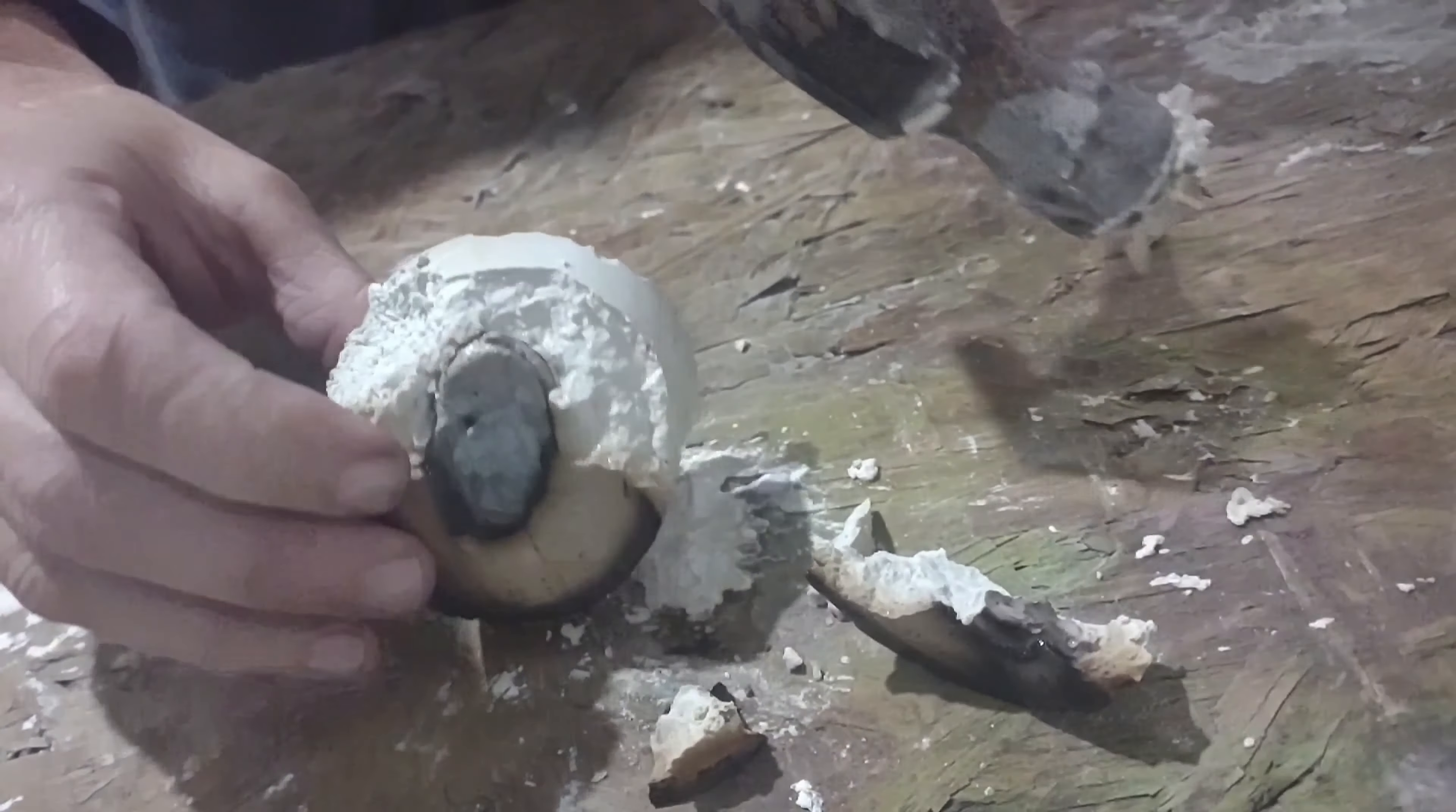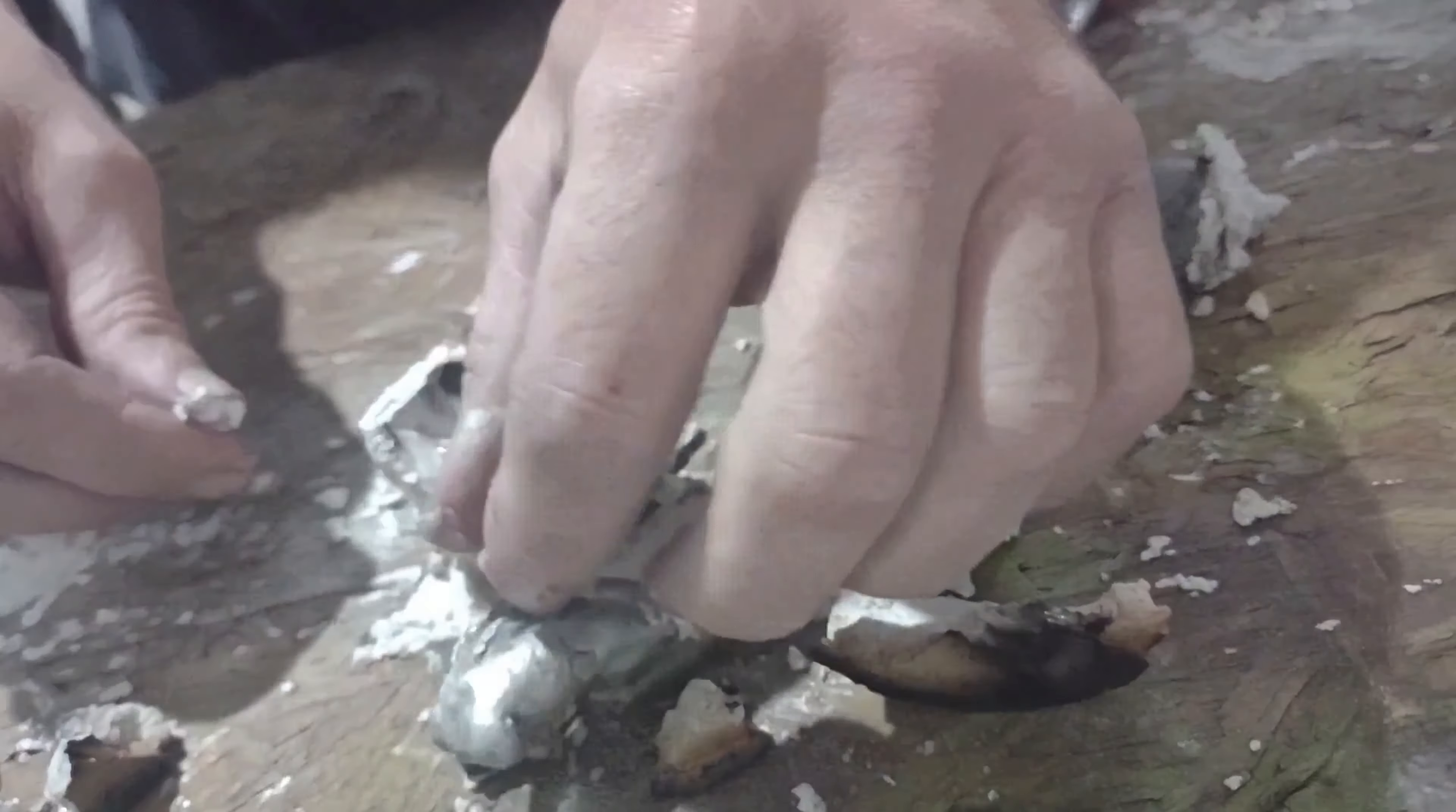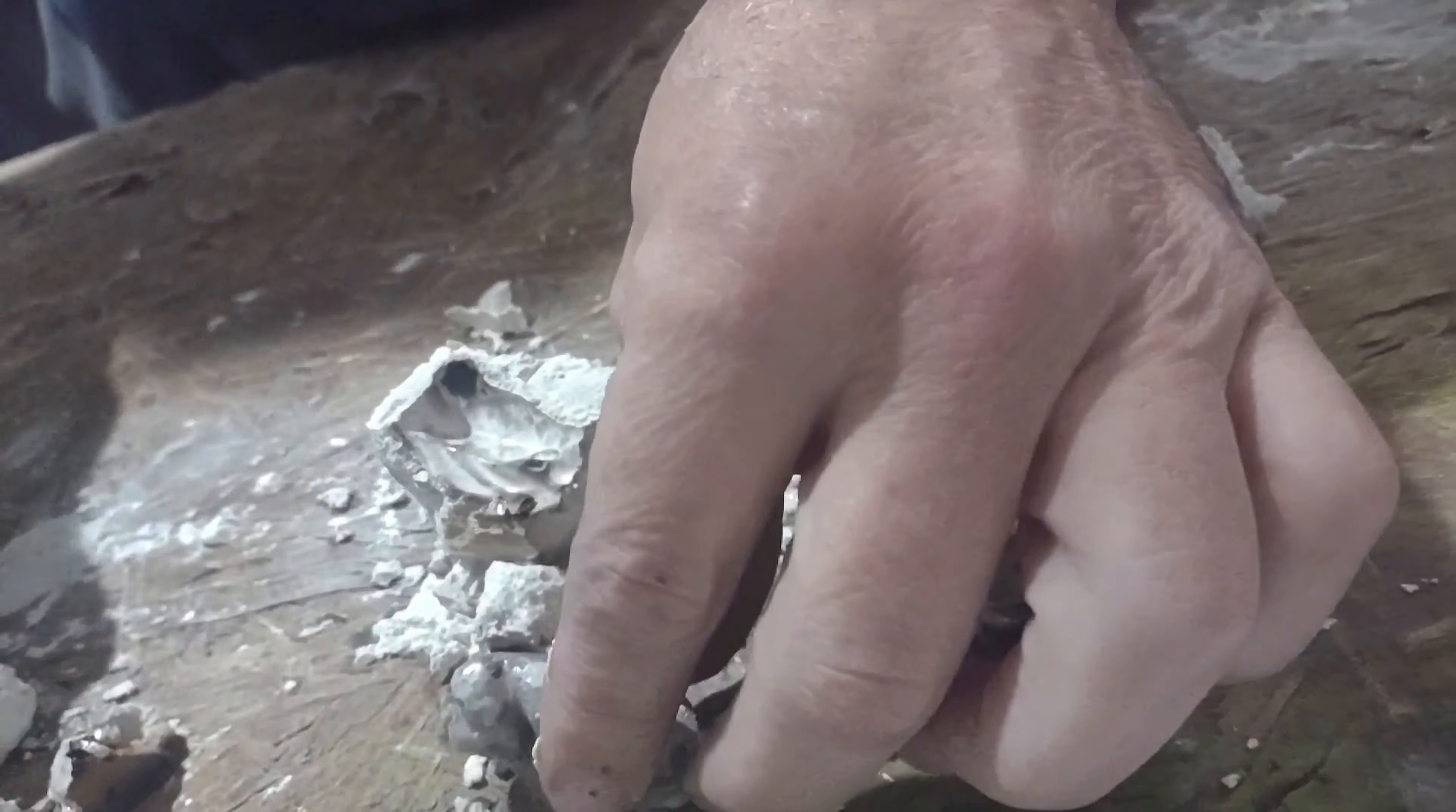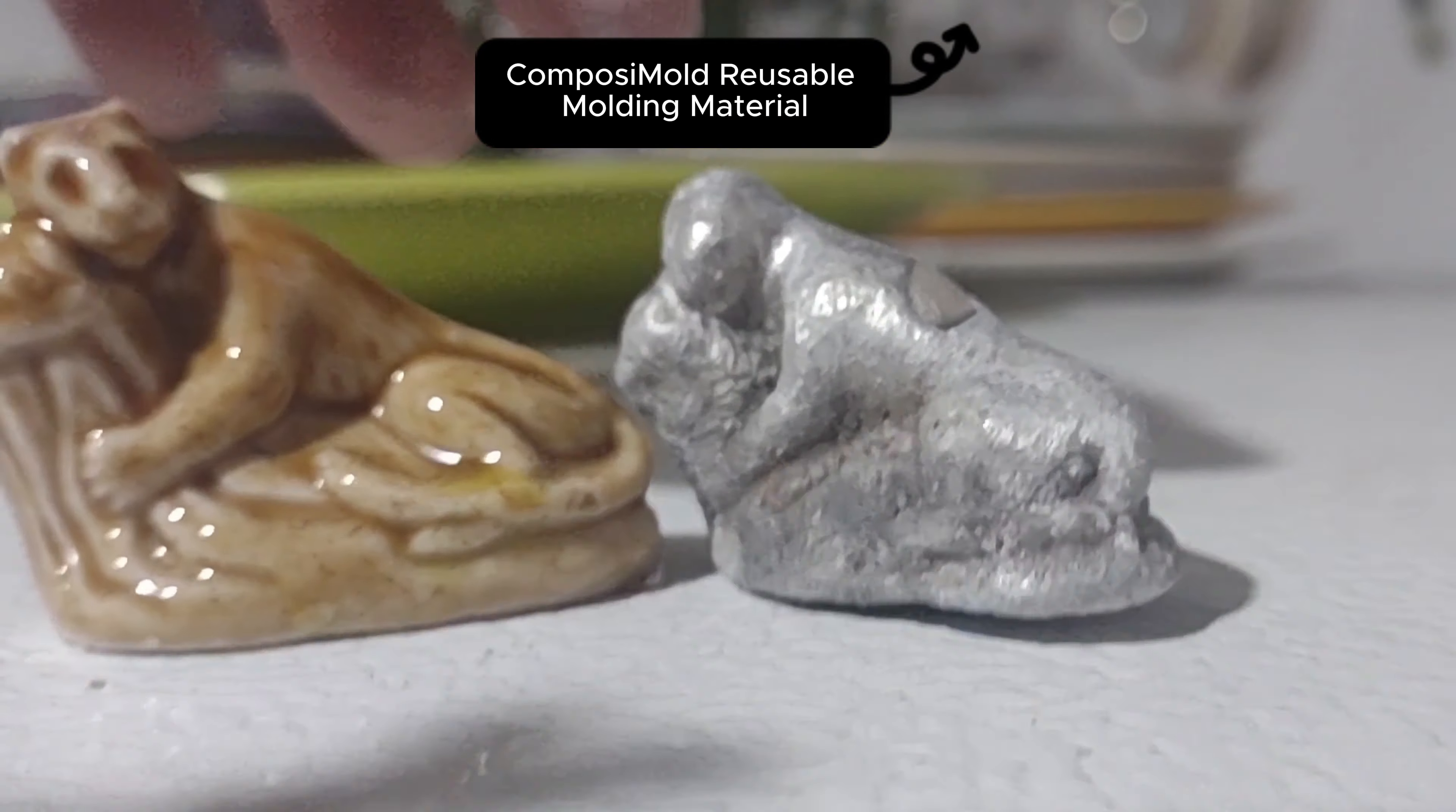I also did another shape just because I could this is another little shape. This is of a mountain lion. Thank you so much for watching. Hopefully this was useful. Let me know what questions you have and you can learn more at ComposiMold.com. Have a great time and be careful.